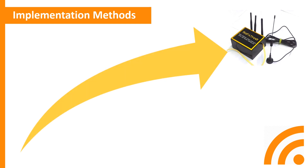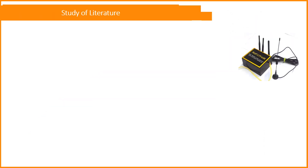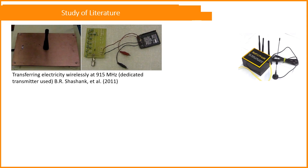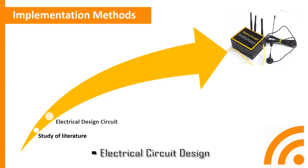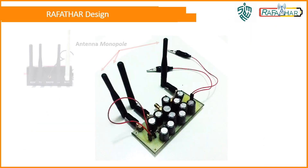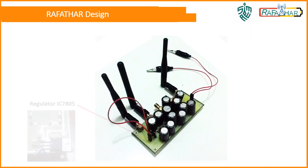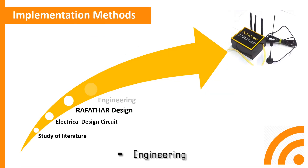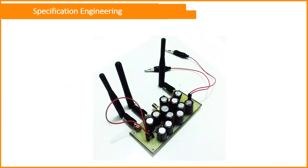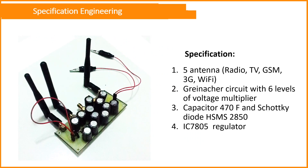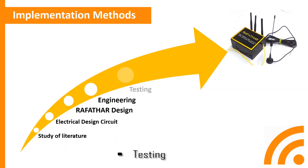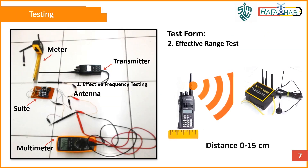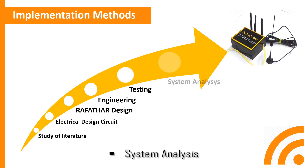The implementation method consists of the following steps: First, study of literature. Second, electric circuit design. Third, RAVATAR device design. Fourth, engineering. Fifth, testing. And last, system analysis.